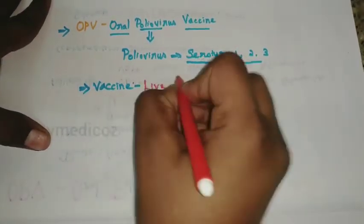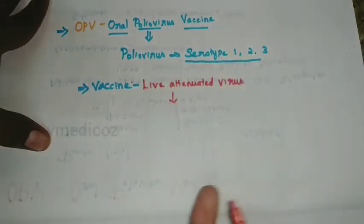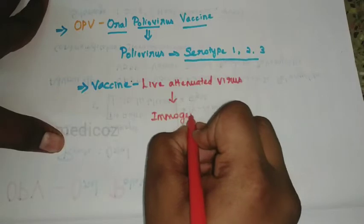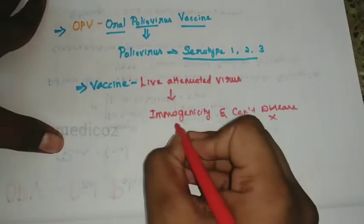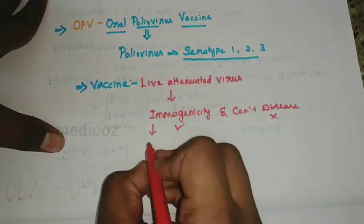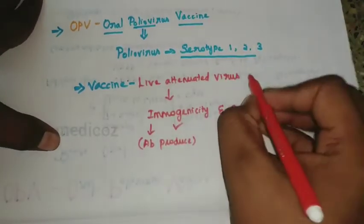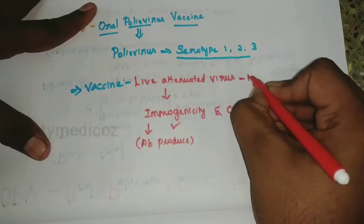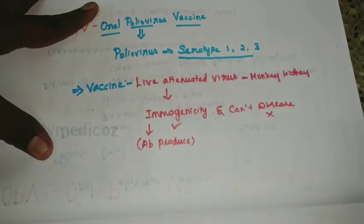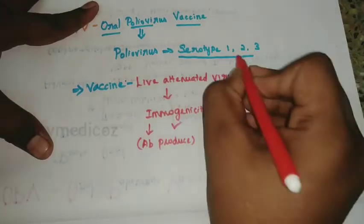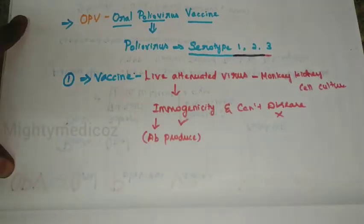OPV is a live attenuated vaccine. The virus can cause only immunogenicity and cannot cause disease, because the disease-causing ability has been removed. Only immunogenicity is retained. Therefore, this live attenuated virus produces antibodies in our body without causing disease. OPV is made by attenuation in monkey kidney cell culture, using three serotypes of polioviruses.